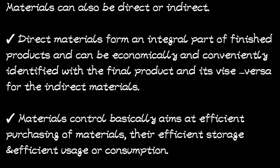So the charcoal becomes an indirect material — it was part of the process but you can't identify it with the final product. The difference is that direct materials form an integral part of the finished product and can easily be identified with it, whereas indirect materials do not. Where there are materials, there is materials control. Materials control basically aims at efficient purchasing, efficient storage, and efficient usage of materials.